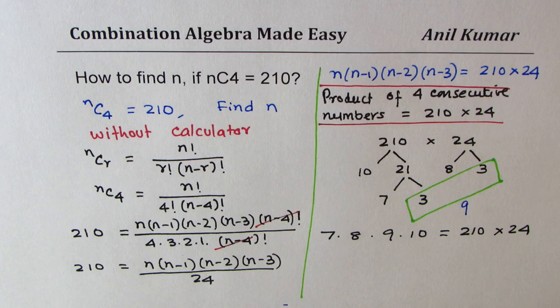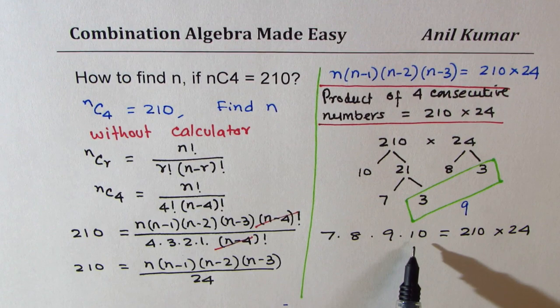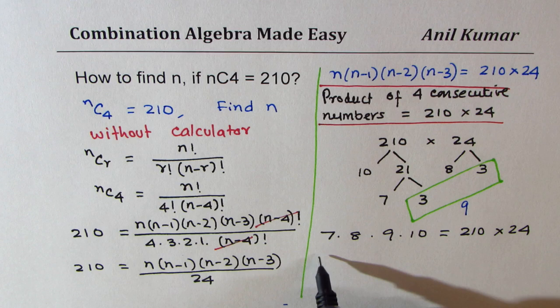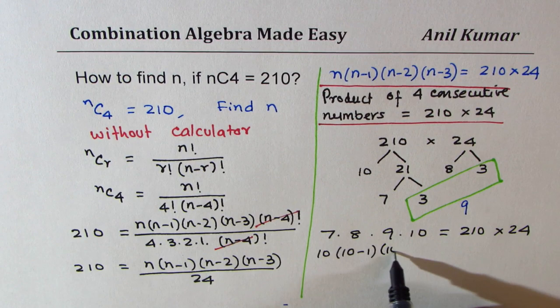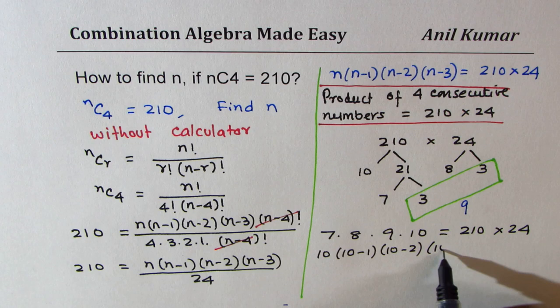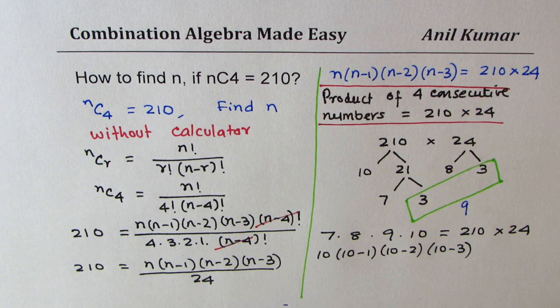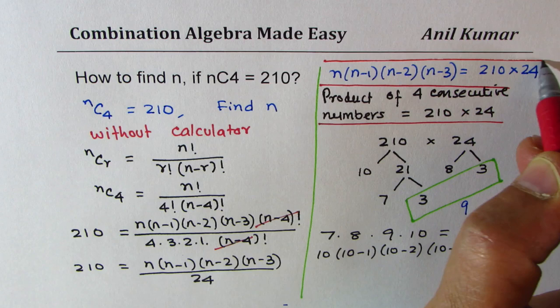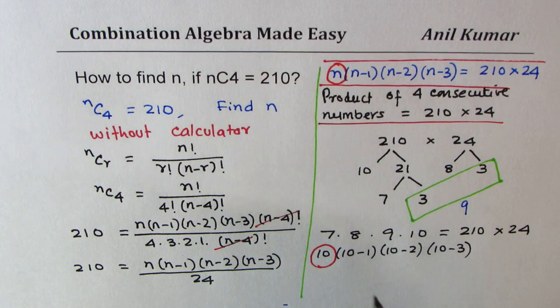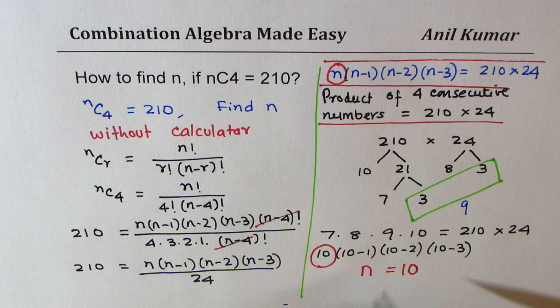So if you compare what you get, we get 10 times 10 minus 1 which is 9, 10 minus 2 which is 8, and 10 minus 3 which is 7. Do you see that? So from comparison, let's now compare it. The number 10 here matches with n. So we can say n is equal to 10. Perfect.